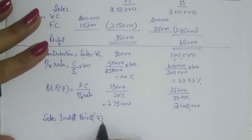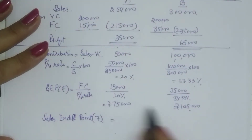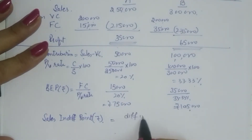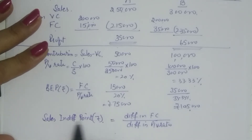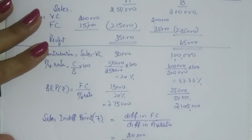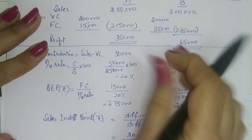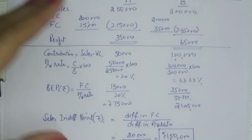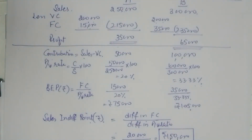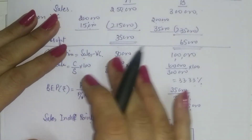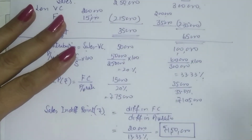The sales indifference point in rupees is: difference in fixed cost divided by difference in PV ratio. Difference in fixed cost = 35,000 − 15,000 = 20,000. Difference in PV ratio = 33.33% − 20% = 13.33%. So SIP = 20,000 / 13.33% = 1,50,000. At this level of activity, both product lines give you the same profit — similar to the cost indifference point, but here we are comparing two products instead of two methods.